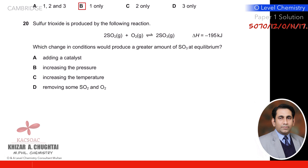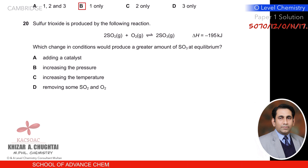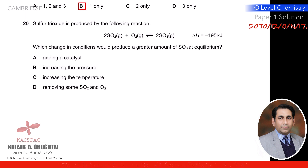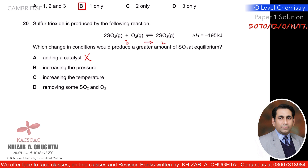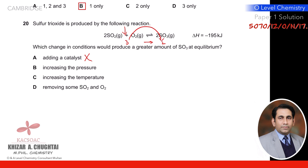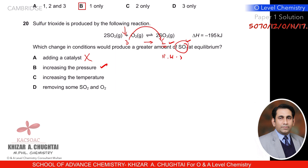Question twenty: the reaction 2SO₂ + O₂ ⇌ 2SO₃ is exothermic. Which change in conditions produces a greater amount of SO₃ at equilibrium? Adding a catalyst does not change the equilibrium position. Increasing pressure — there are 3 moles on the left and 2 moles on the right; increasing pressure shifts equilibrium to the right, producing more SO₃. So B is the correct option.